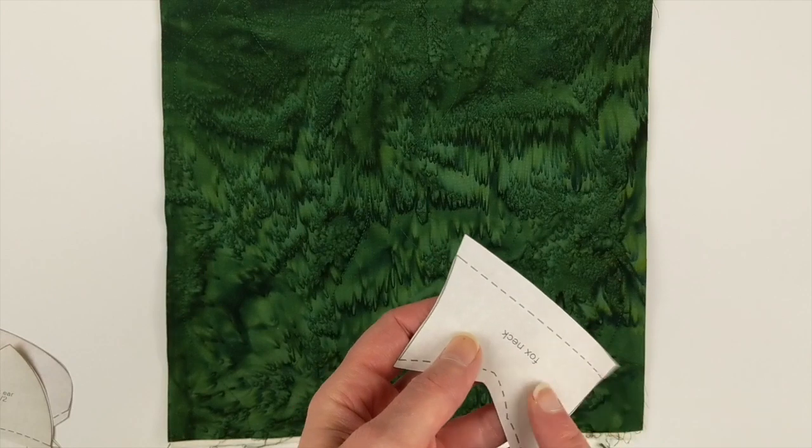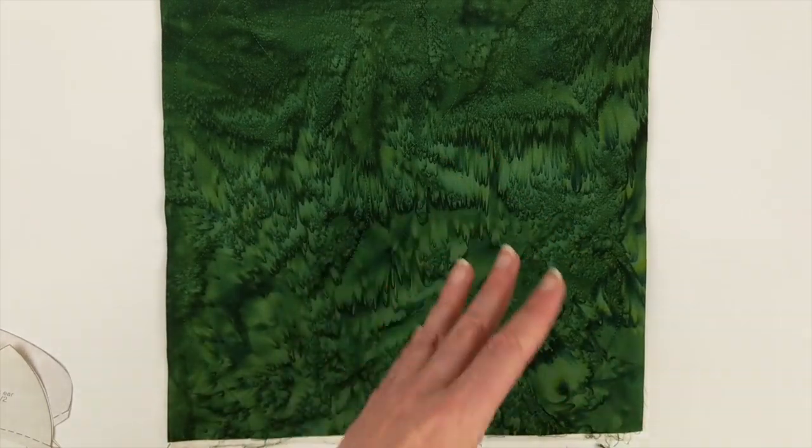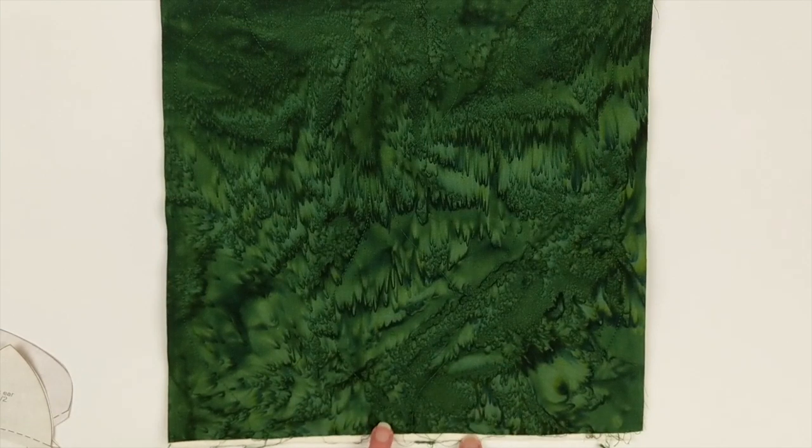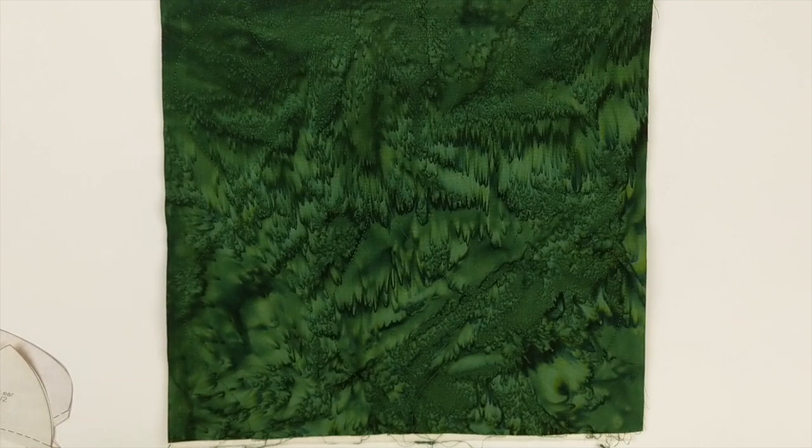So next up, we're going to peel the backing off of all the pieces and place them on our block. And I always like to start with the cut edge because I like to make my pieces look like I imagine it like they're being framed in a photograph.